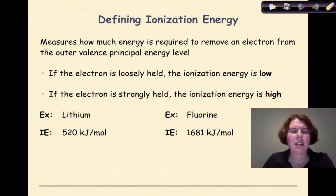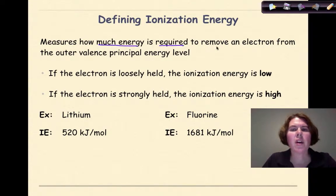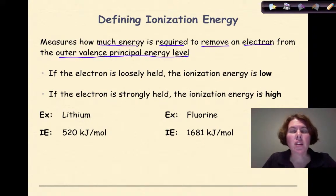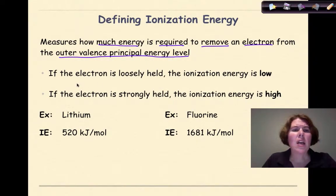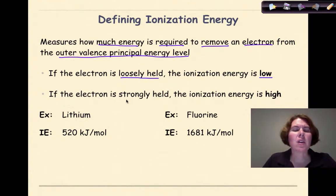So let's start with ionization energy. Ionization energy is going to measure how much energy is required to remove an electron from the outer valence principal energy level — in other words, how much energy does it require to remove one of the valence electrons from the outermost shell. If the electron is loosely held, the ionization energy is going to be low. If the electron is strongly held, the ionization energy is high.